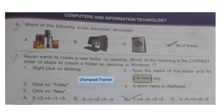Next section: Computers and Information Technology. Question 6: Which of the following is or are electronic device or devices? The correct answer is option B — all of these.